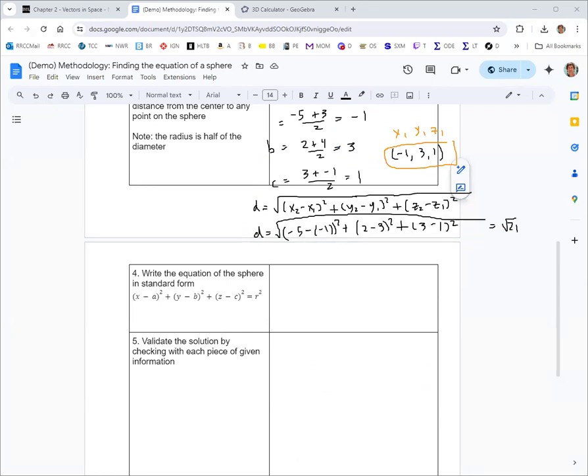We're now ready for step four, where we write the equation in standard form. You have the formula there: x, y, and z are the variables, a, b, and c are the coordinates of the center, and r is the radius. We just put those constants into the formula, so it would be (x - (-1))² + (y - 3)² + (z - 1)² = (√21)², and then that could be simplified. That is our equation of our sphere.